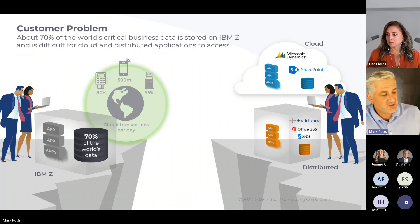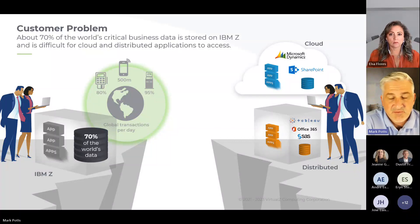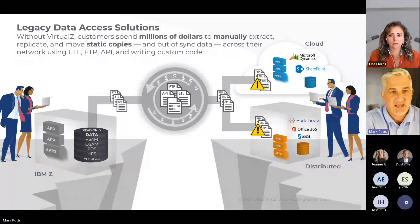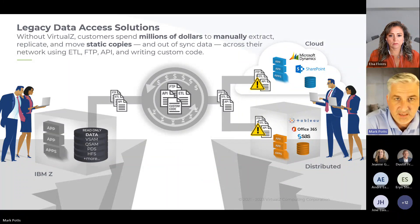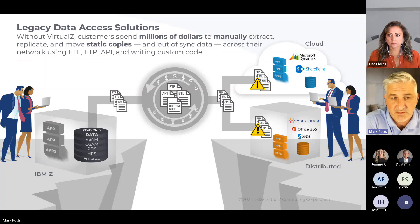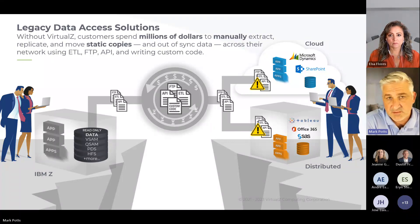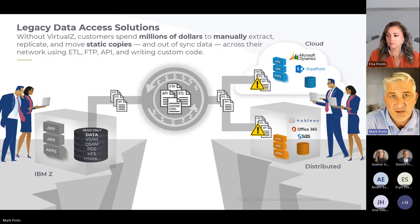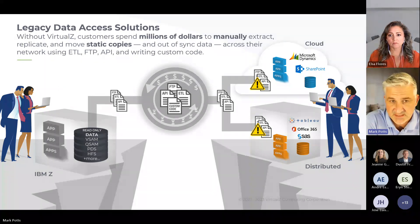Looking at how people access that data today, they're typically doing it with ETL, FTP, or APIs where they're doing something like ZOS Connect and then creating new or existing COBOL code — but it's still all running on ZOS, which can increase your MIPS and your consumption of the mainframe. The most common ETL tools aren't ZIP eligible, so they're running on ZOS and are expensive, consuming a good portion of your MIPS for clients that use ETL to get data to the cloud.